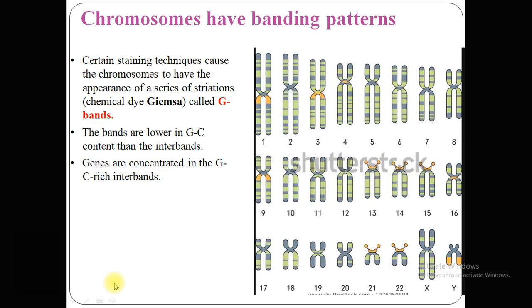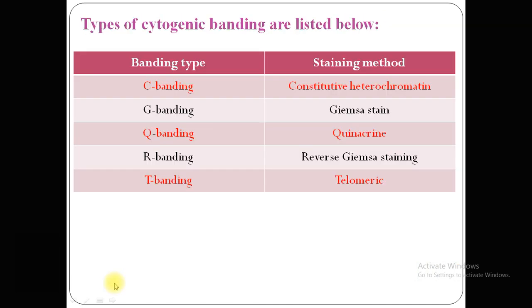There are several different types of stains used for chromosome banding. G-banding uses Giemsa stain and gives a series of light and dark stripes along the length of the chromosome. Q-banding uses a stain called quinacrine and yields a fluorescence pattern similar to G-banding but glows yellow. C-banding only stains the centromere region of the chromosome, which is the constricted portion where sister chromatids attach to each other.